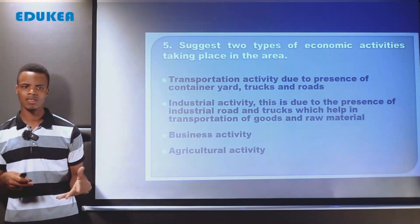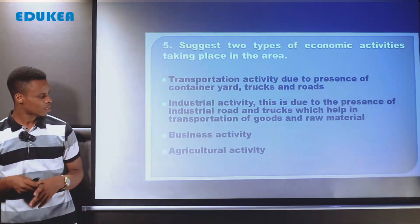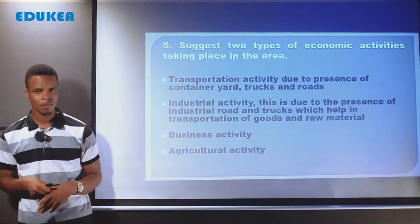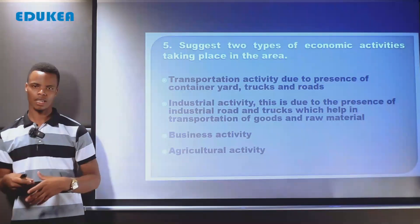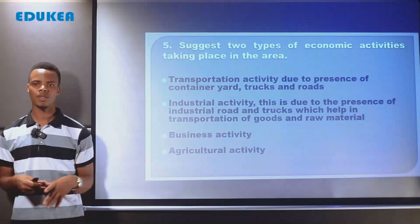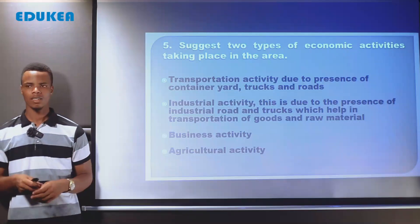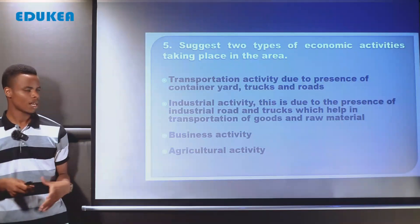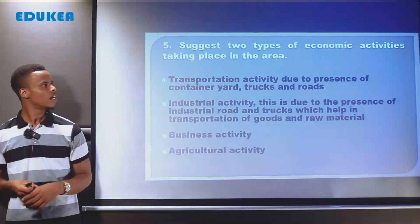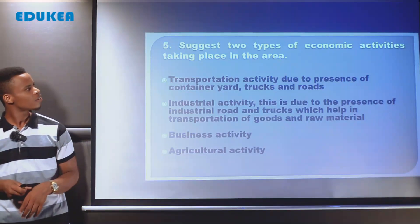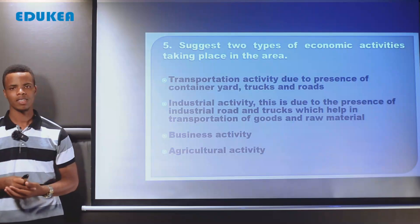The second economic activity is industrial activities — manufacturing industry — due to the presence of industrial roads and trucks which help in transportation of goods and raw materials. The containers nearby also suggest that industrial activities are taking place. Other possible activities include business activities, due to roads and movement of people, and agricultural activities, as there is enough space at the middle and back of the photograph for agriculture. That concludes the five questions for our photograph session.